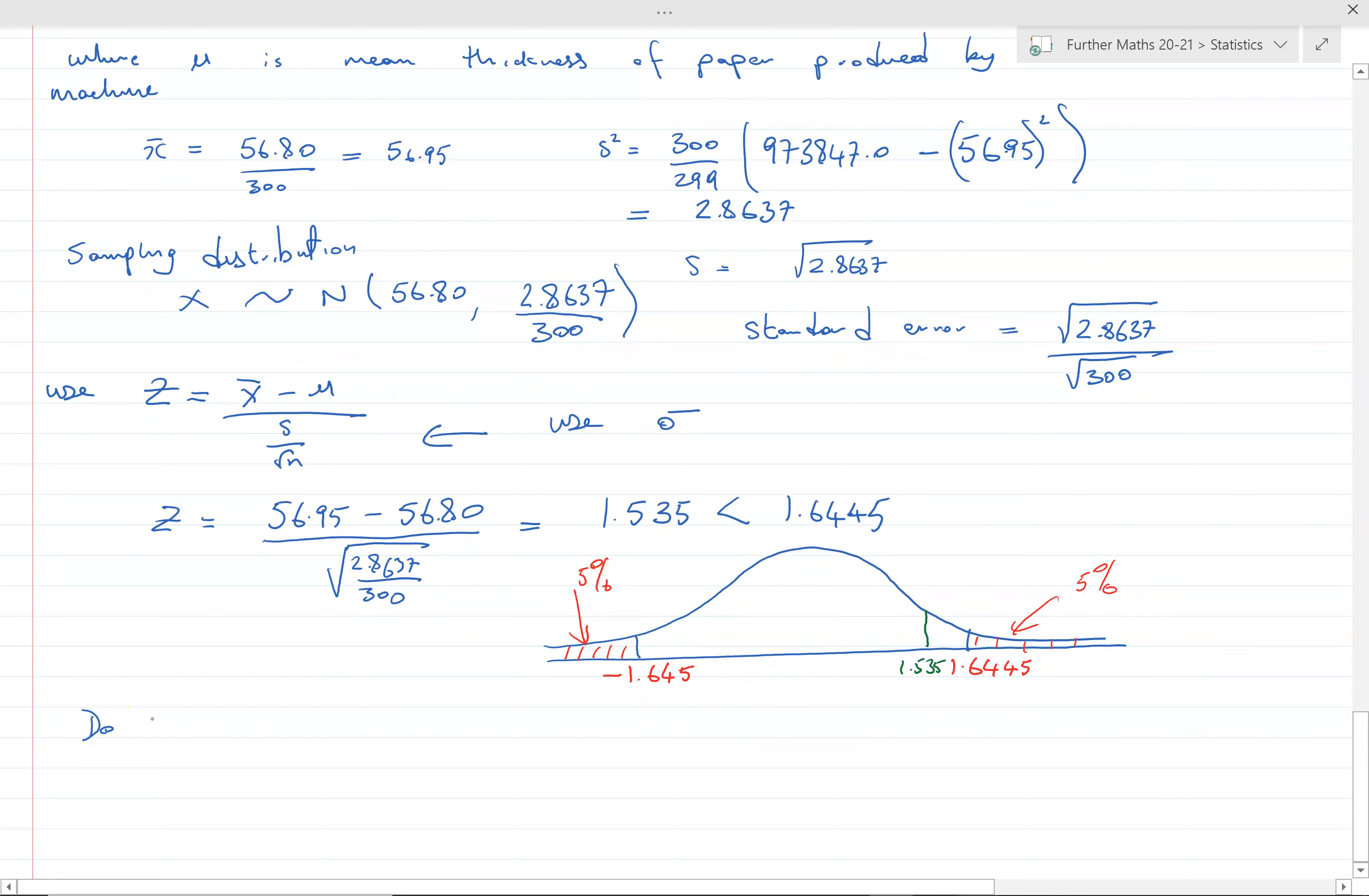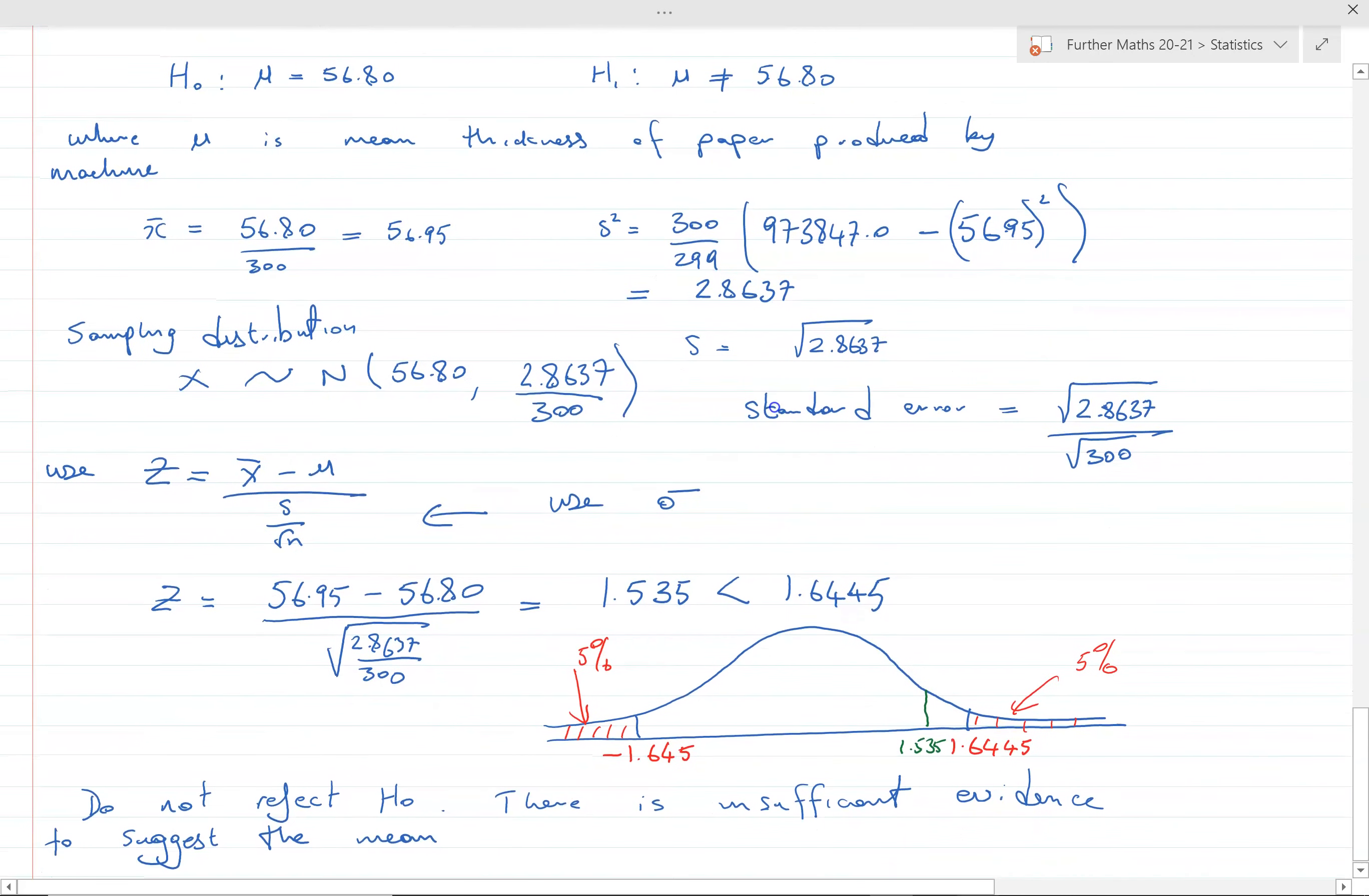The conclusion is: do not reject H₀. There is insufficient evidence to suggest the mean is not 56.80.